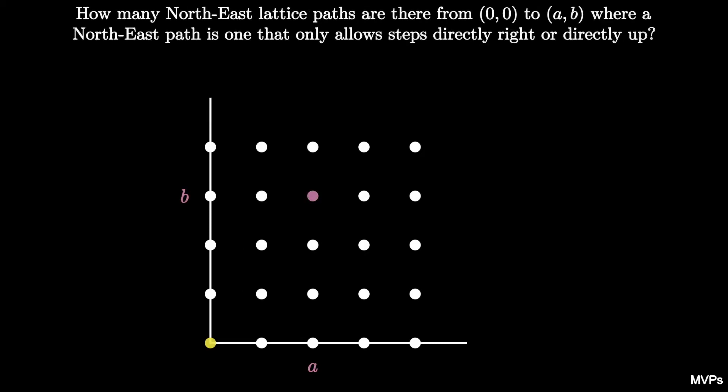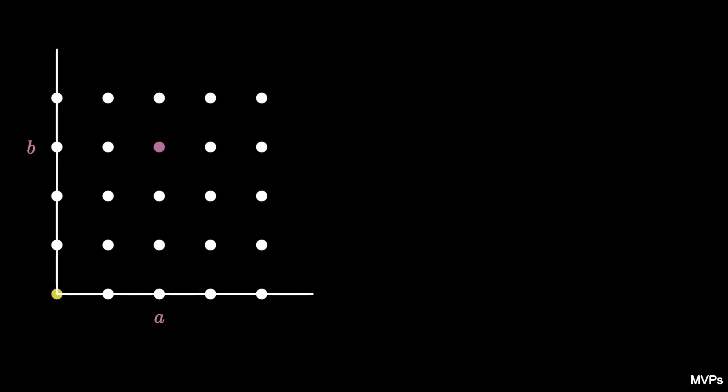Consider the lattice of points in the plane with non-negative integer coordinates. Let's label the origin and the point (a,b). How many northeast lattice paths are there from (0,0) to (a,b), where a northeast path is one that only allows steps directly right or up?